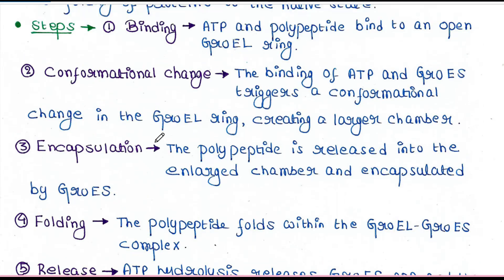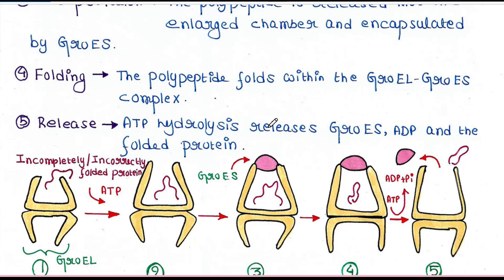After binding, the next step is conformational change. The binding of ATP and GroES triggers a conformational change in the GroEL ring, creating a larger chamber. This is the time when GroES binds this system — GroES is one more protein. It binds GroEL, and once it binds GroEL, the chamber is broadened and the unfolded protein properly fits here.